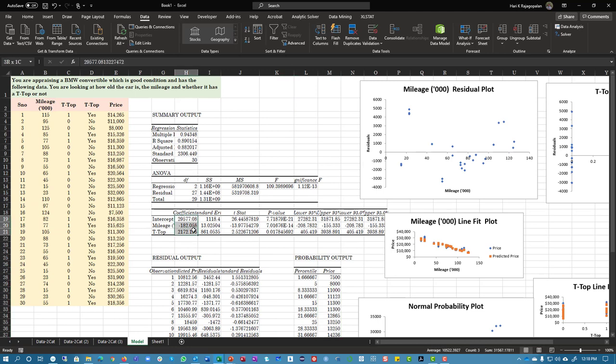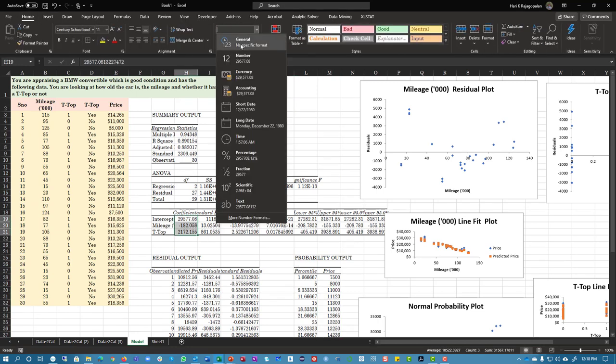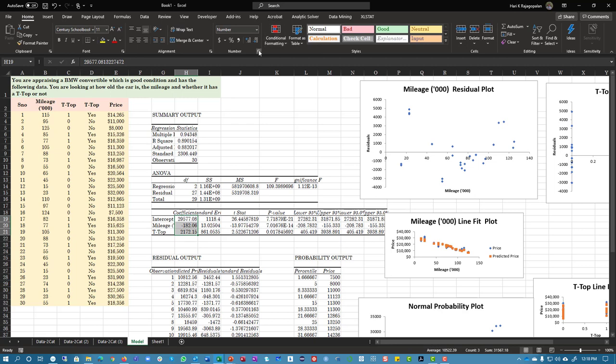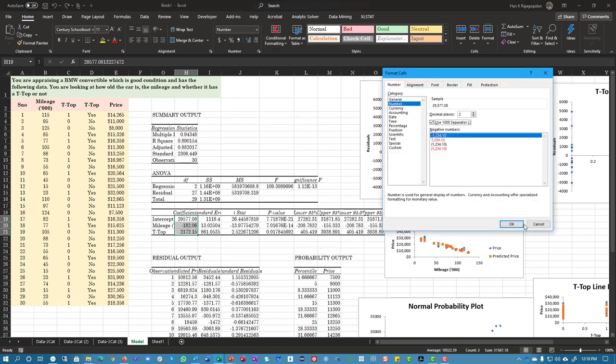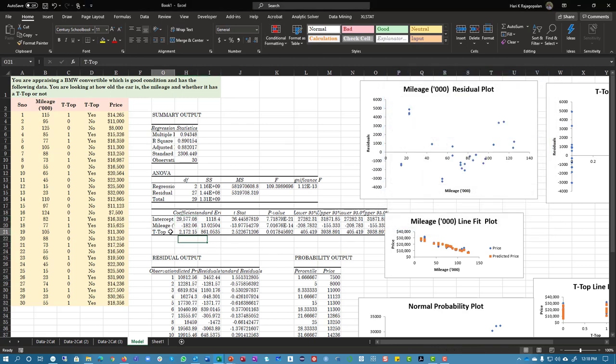And here you'll get your final model for regression for categorical variables. And what we're trying to say is that if it's a T top, you're going to get about $2,172 more.